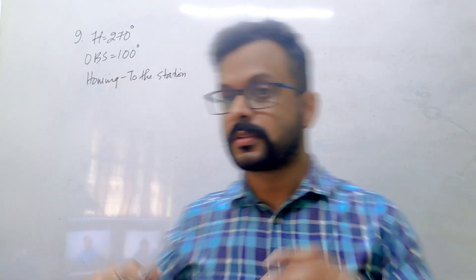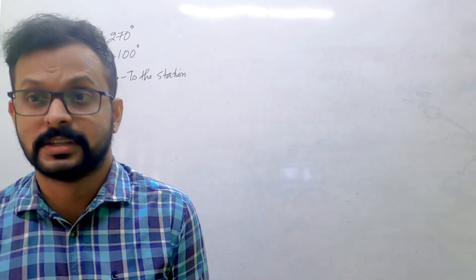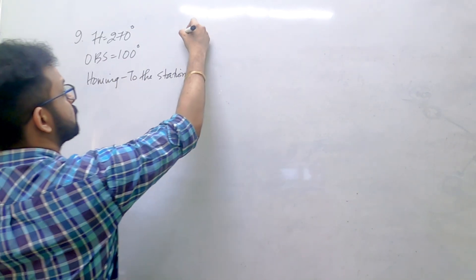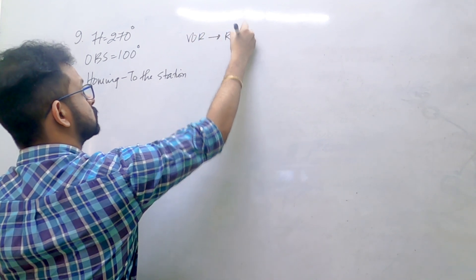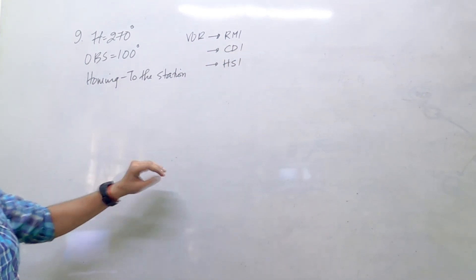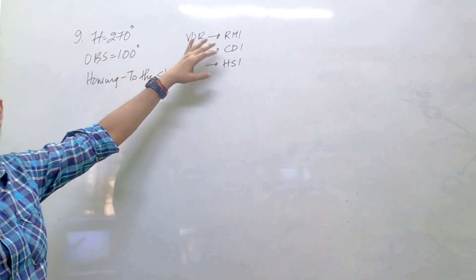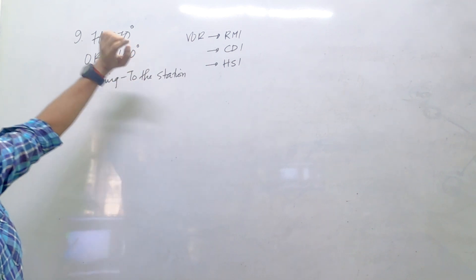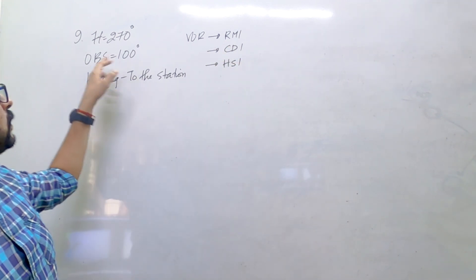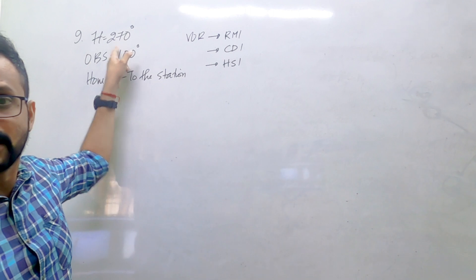Let's recap what we studied in the previous class. What is OBS? It is a desired radial — a bearing selection. We have different instruments with different indications: RMI, CDI, and HSI. We are particularly looking at CDI here because CDI and HSI are the ones which have OBS. CDI indication does not depend on your heading — we saw that in the simulator.